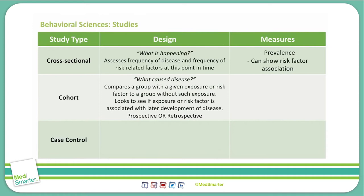A cohort study asks: what caused the disease? This compares groups with given risk factors and given exposures to groups that don't have those exposures or risk factors. So in a cohort study, we can see if having a risk factor increases our risk of having the disease — is it associated with any later development?